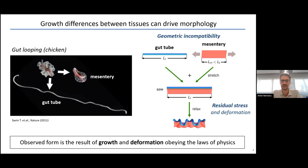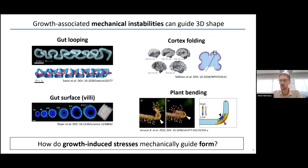The form we observe in biological structures is always a result of growth history and deformation obeying the laws of physics. There are many examples of growth-associated mechanical instabilities driving different morphologies — not only the looping of the gut, but also the inner surface villi of the gut, cortex folding, and bending in plants all depend on such mechanical instabilities.